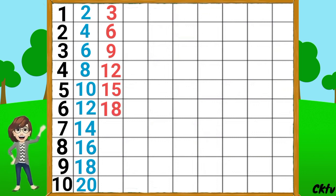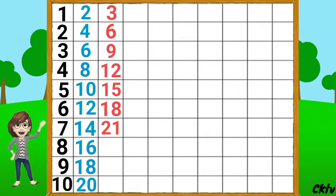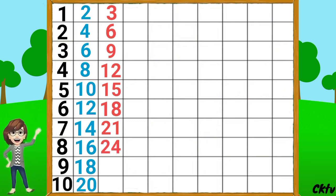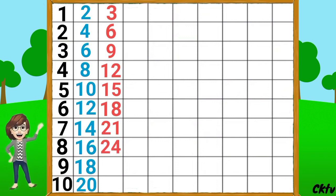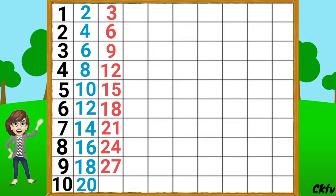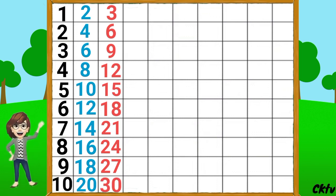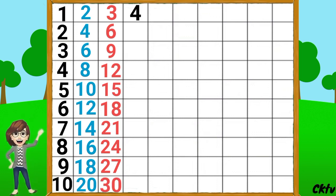3 6's a 18, 3 7's a 21, 3 8's a 24, 3 9's a 27, 3 10's a 30. Table of 4.